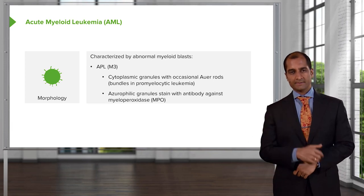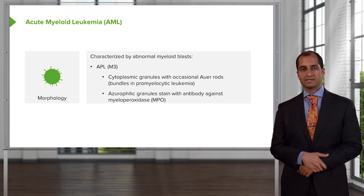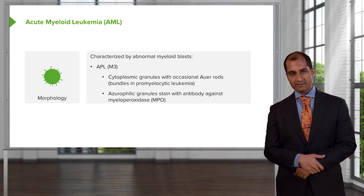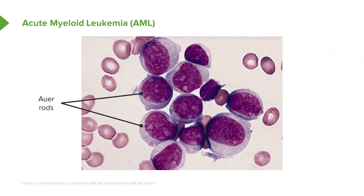If you see Auer rods, it's most likely M3. If your patient has a 15;17 translocation and responds to treatment with ATRA, all-trans retinoic acid, then you know this is an Auer rod. Looking at this picture, you see the needle-like structure that the arrow is pointing to — that is an Auer rod — and it stains positive for myeloperoxidase. This would be a picture for acute myelogenous leukemia, showing large nuclei with nucleoli representing the blasts identified in the peripheral blood smear, with blasts at greater than 20% in the bone marrow.